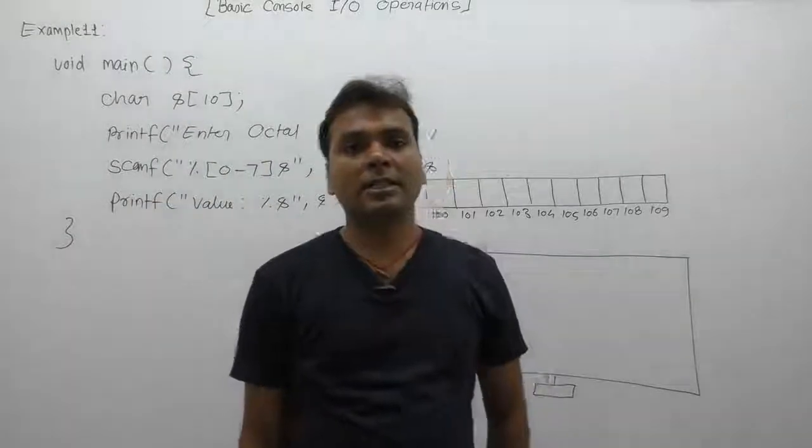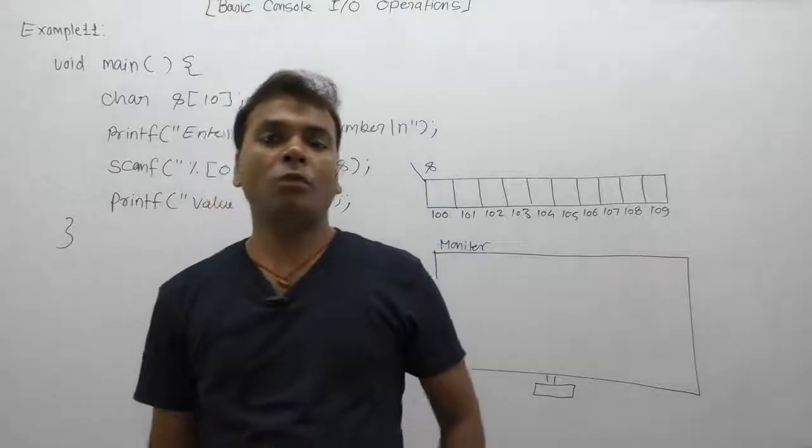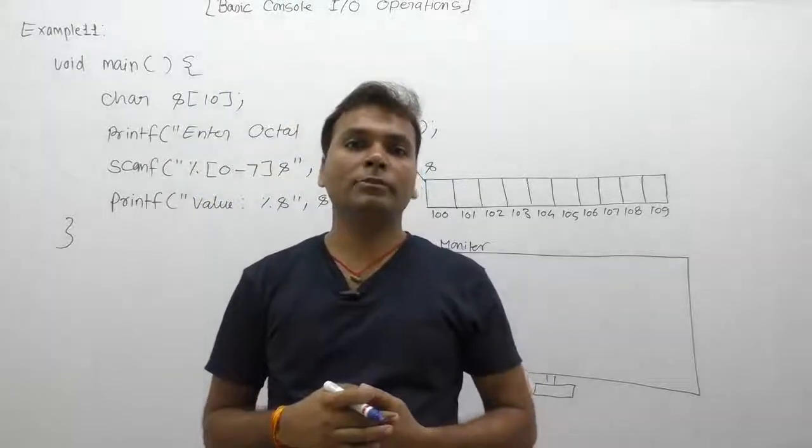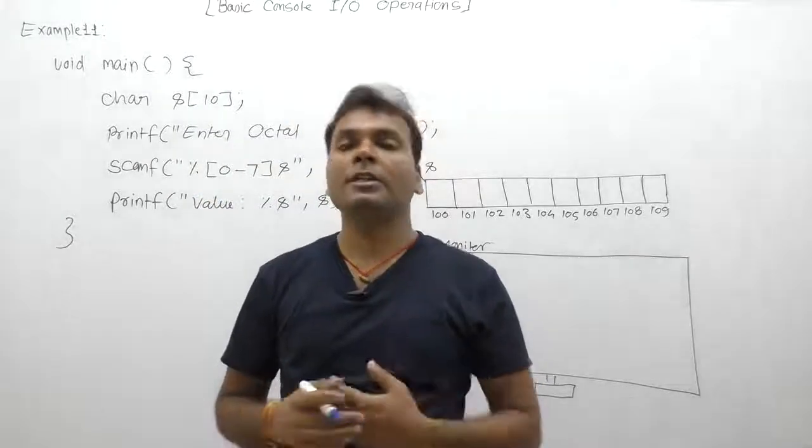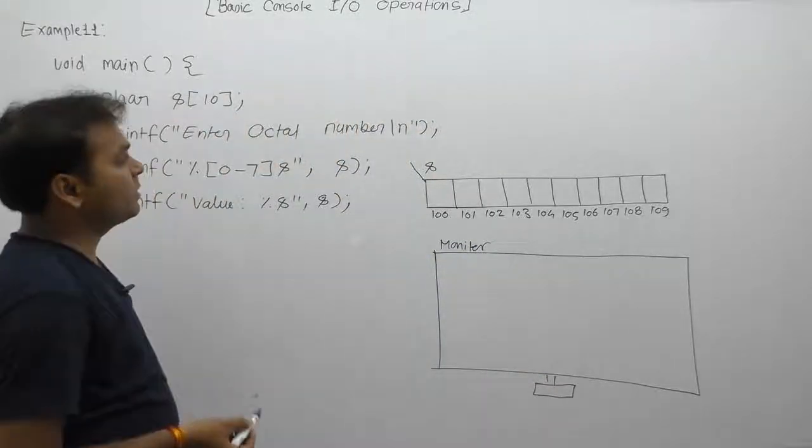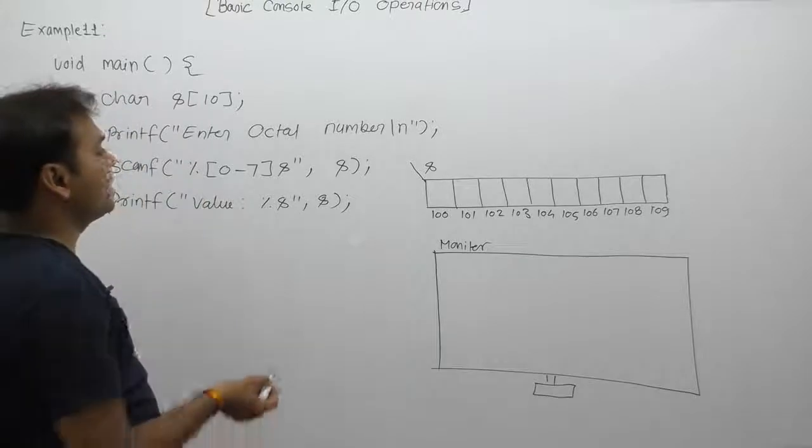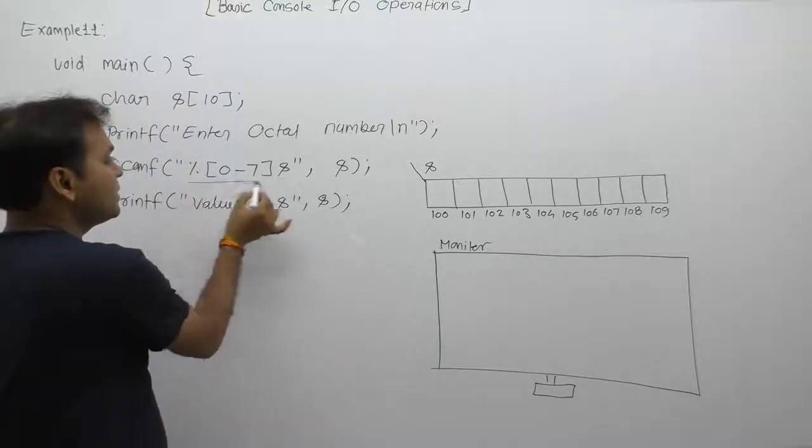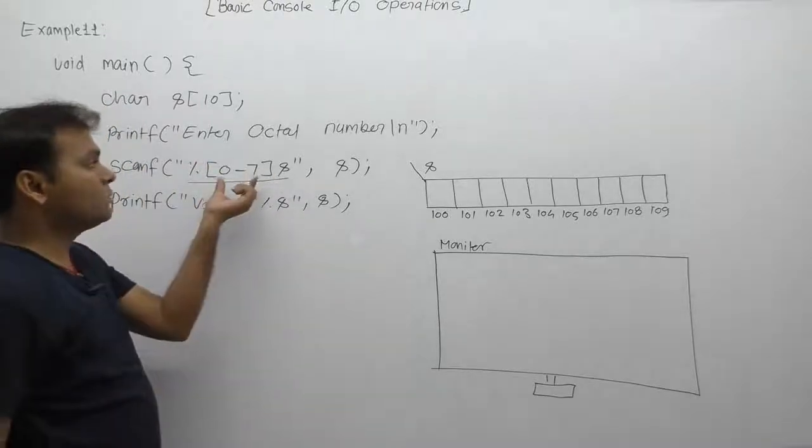Next example of scanf function: how to read only octal digits using scanf as strings. Suppose we want to read string form at runtime with only octal digits allowed. In this case, we write a regular expression for only zero to seven digits, as we know.